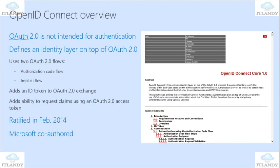OpenID Connect — what is it? OAuth2 is not intended for authentication. OpenID Connect defines an identity layer on top of OAuth2. It uses two OAuth2 flows: authorization code flow and implicit flow. It adds an ID token to the OAuth2 exchange.